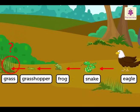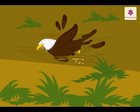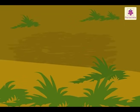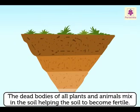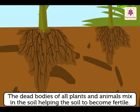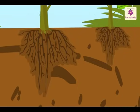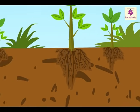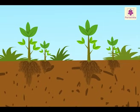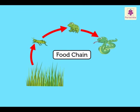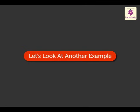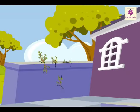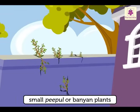When the eagle dies, its body decomposes and gets mixed into the soil. The dead bodies of all plants and animals mix in the soil, helping it become fertile, so the grass and all the other plants grow well. This is called a food chain.